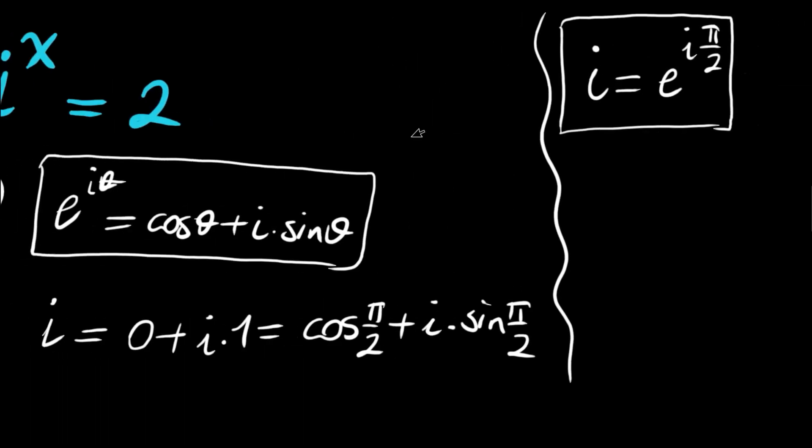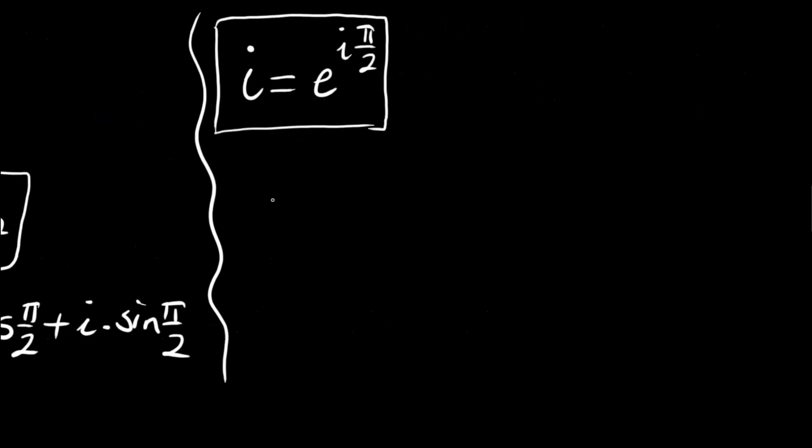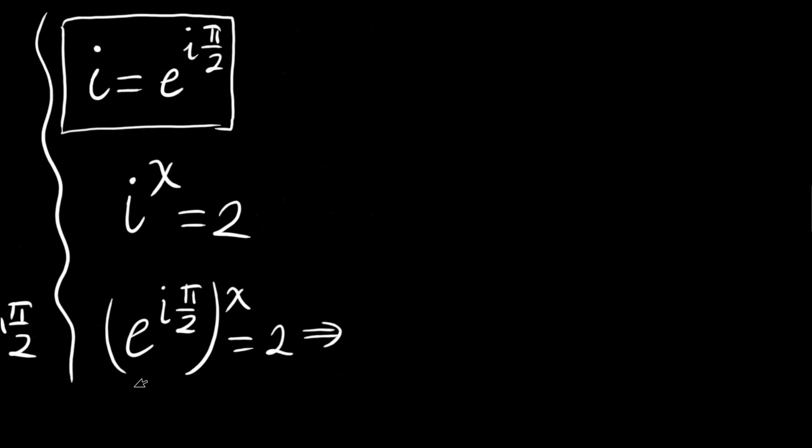Let's take our question now. i to the power x is equal to 2, so e to the power i times pi over 2, to the power x, is equal to 2. Now we will ln both sides to write ln of e to the i pi over 2 to the power x is equal to ln 2.